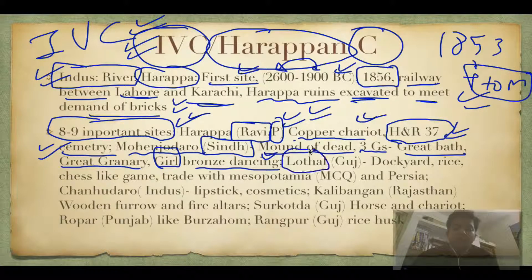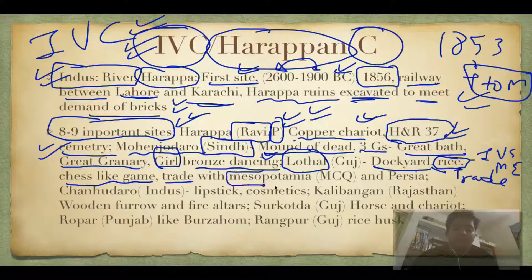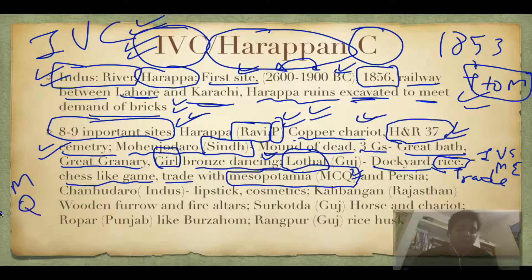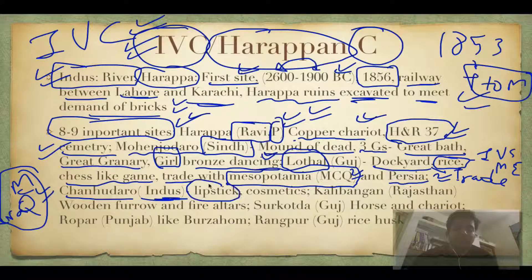Lothal is in Gujarat and is famous for its dockyard, indicating trade between IVC and Mesopotamia and Egypt. There is also evidence of rice and a chess-like game at Lothal. Remember the mnemonic MCQ: M for Mesopotamia, Q for Iraq — so you won't confuse Mesopotamia with Iran. It belongs to the region of Iraq and also Persia. Chandhududo is near the Indus River and has evidence of lipstick, showing they were well versed in cosmetics.